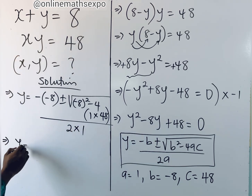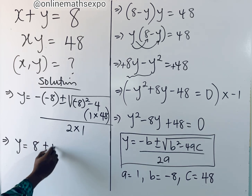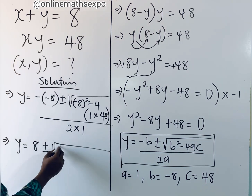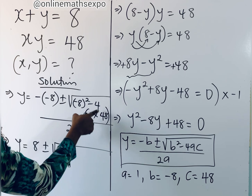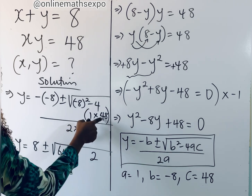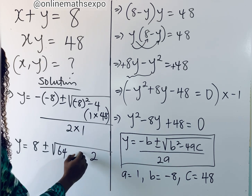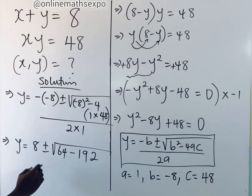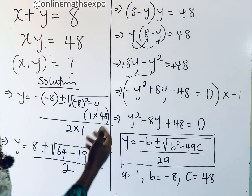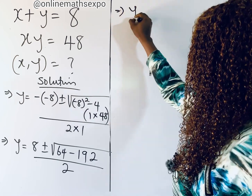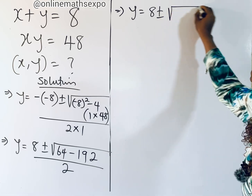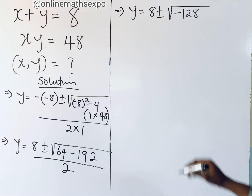Plugging in, y equals negative of (negative 8) plus or minus the square root of (negative 8) squared minus 4 times 1 times 48, divided by 2 times 1. Simplifying: negative 8 squared is 64, and 4 times 48 is 192. So we have y equals 8 plus or minus the square root of 64 minus 192, which gives square root of negative 128, divided by 2.